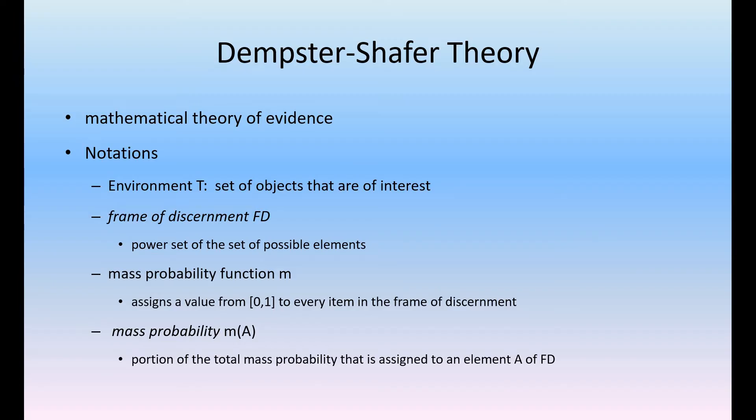As the name suggests, the scientists Dempster and Shafer invented this, so according to their names this theory was given the name Dempster-Shafer theory. It's a mathematical theory of evidence and a very good mechanism to handle uncertainty in artificial intelligence.